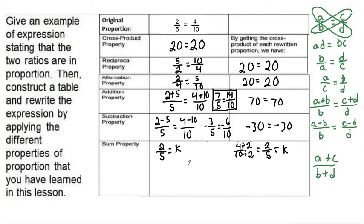So our a plus c is 2 plus 4 divided by our b plus d is 5 plus 10. So when we add that, 2 plus 4 is 6 and 5 plus 10 is 15, but these both have a common factor of 3.